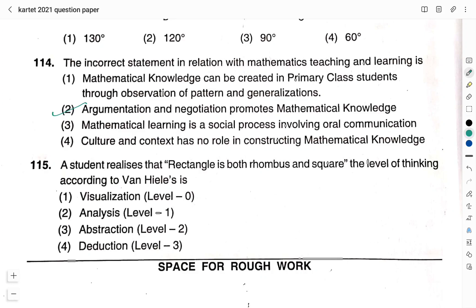Question number 115. A student realizes that rectangle is both rhombus and square. The level of thinking according to Van Hiele is option 1: Visualization Level 0, option 2: Analysis Level 1, option 3: Abstraction Level 2, option 4: Deduction Level 3. This Van Hiele's theory related to mathematics pedagogy is very important. I will try to make a video on this particular topic if time permits. And the right answer for this question, when students realize rectangle is both rhombus and square, that level of thinking is Level 2, Abstraction. Right answer here is option 3.